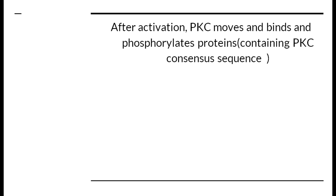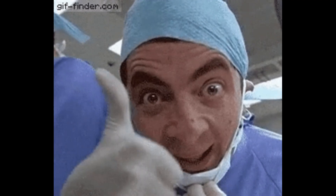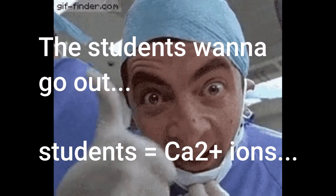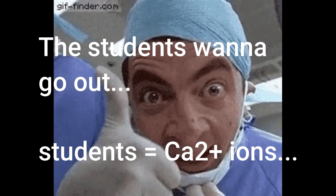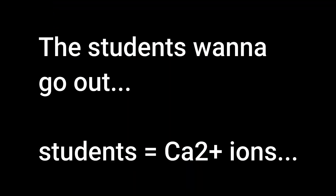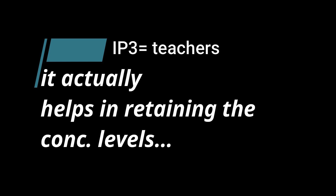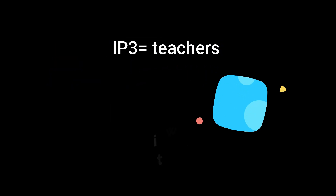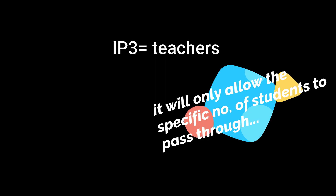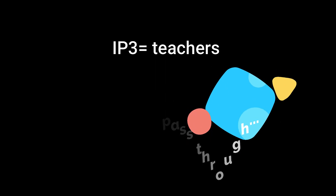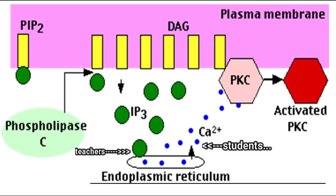Let's take an example: school students represent the calcium ions, and DAG can be taken as the guard of the gate. The bell rang and they want to go out of school. But there can only be a few students who can pass the gate at a time — that is the concentration level that needs to be maintained. The IP3 actually helps in maintaining the concentration level, just like teachers telling students not to crowd the gate, helping them pass in a coordinated manner.